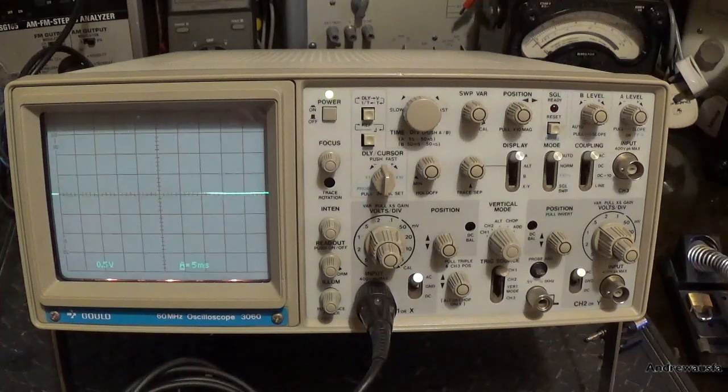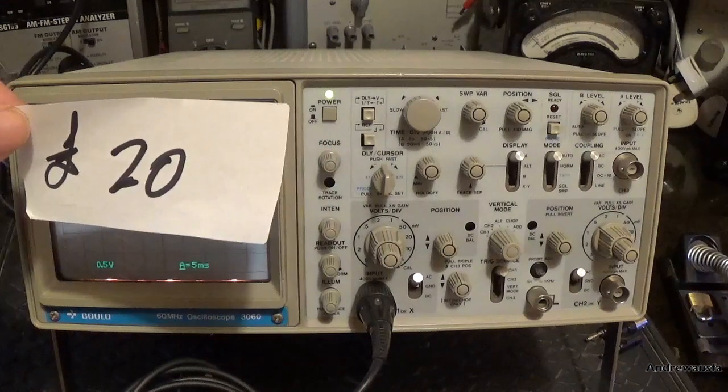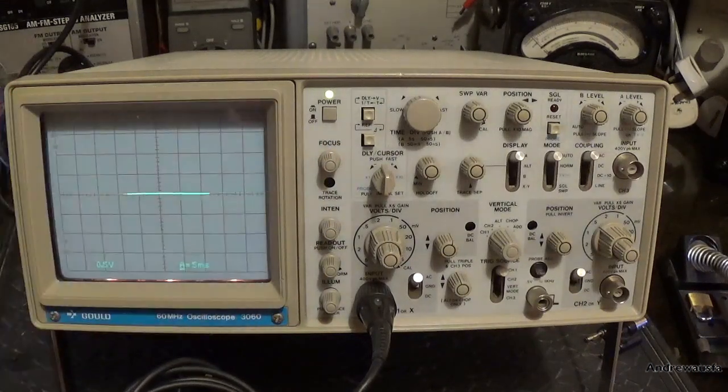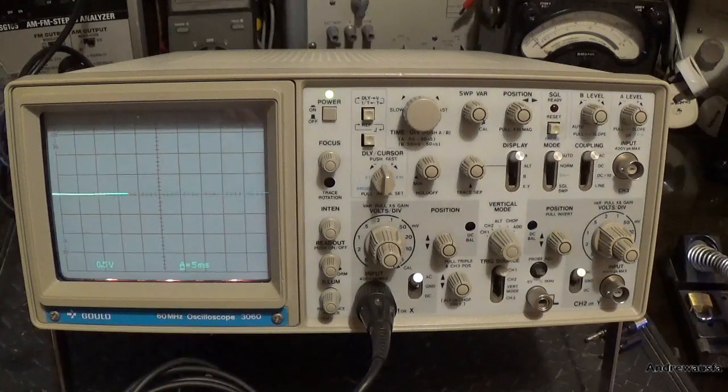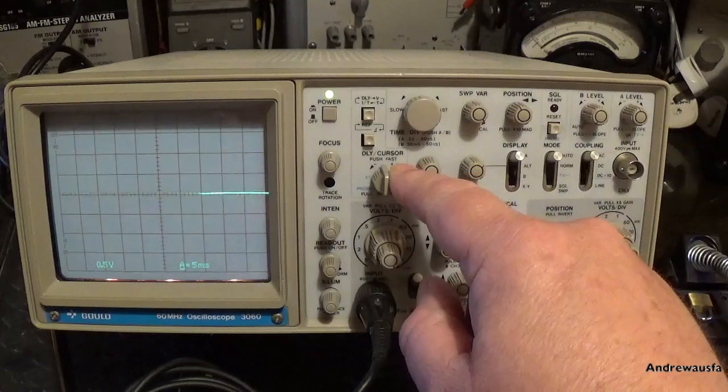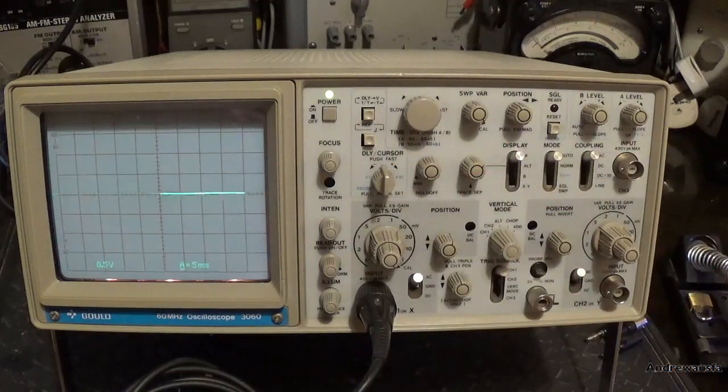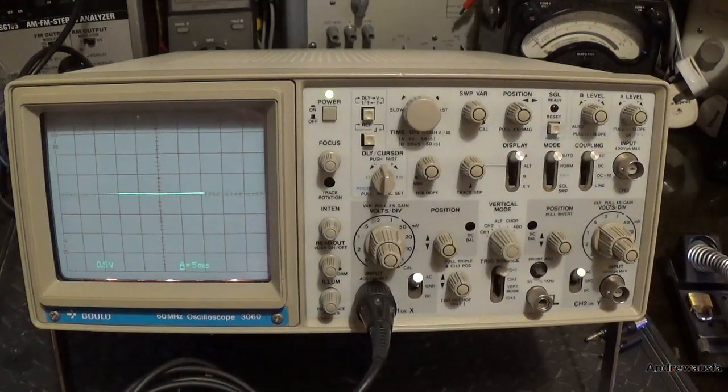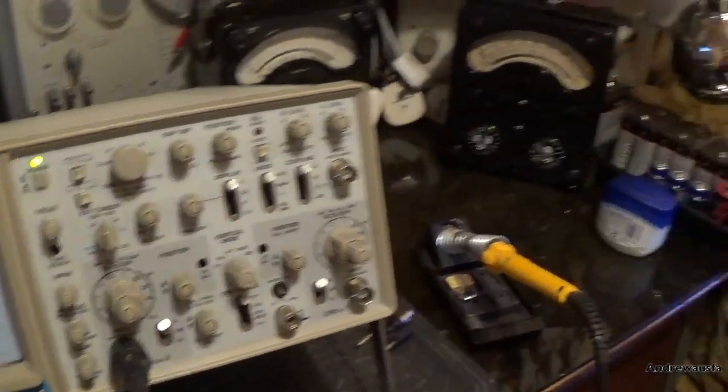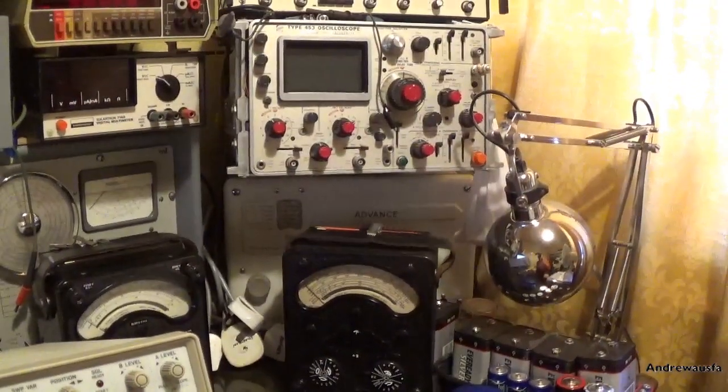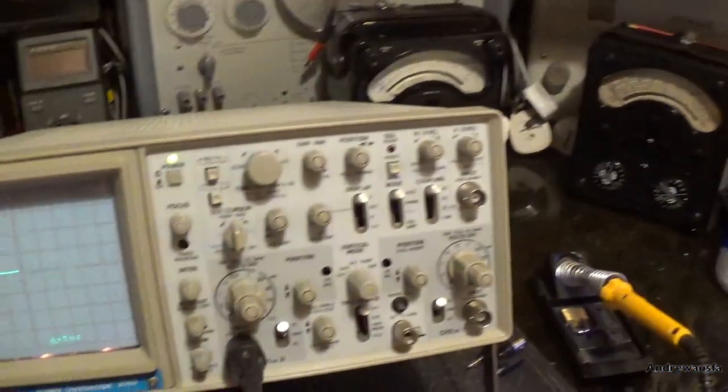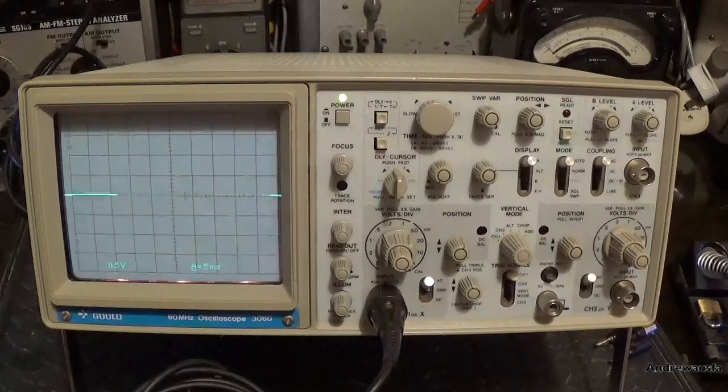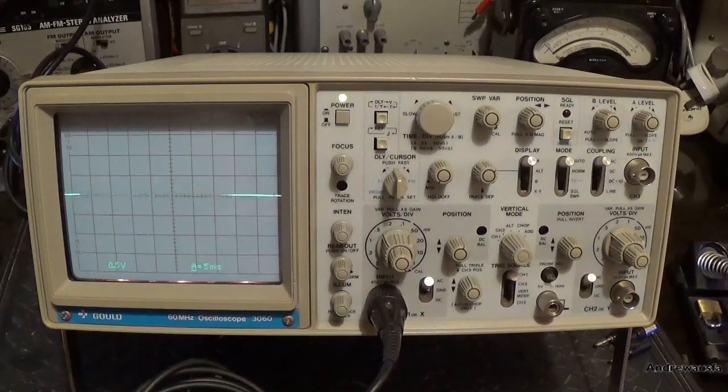I had a more interested look and noticed that it had cursors on it. Now I don't have a scope that's got cursors. My main scope that I use is this Tektronix 453, which if you've seen my videos before you've probably seen. I've got another scope in this room at the moment as well.